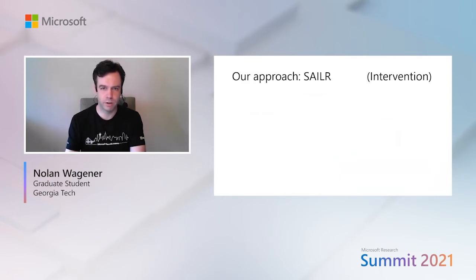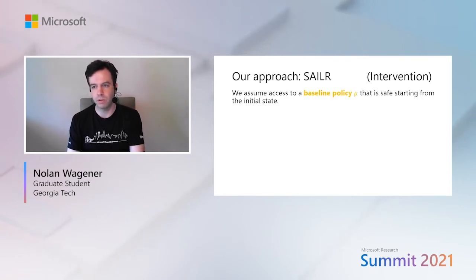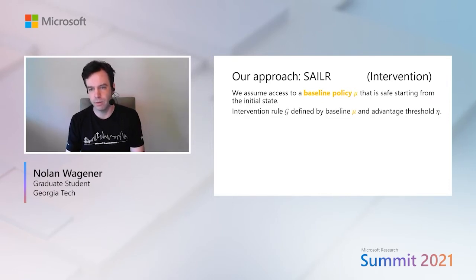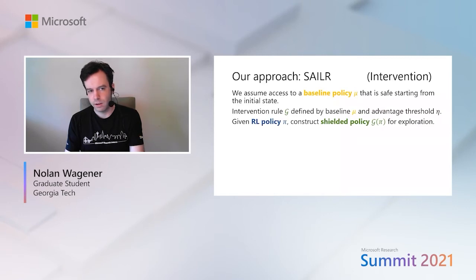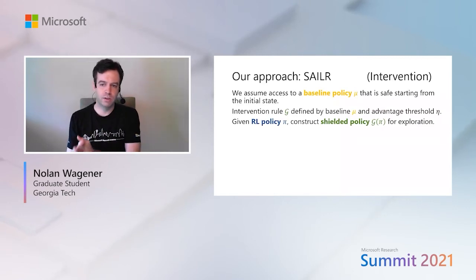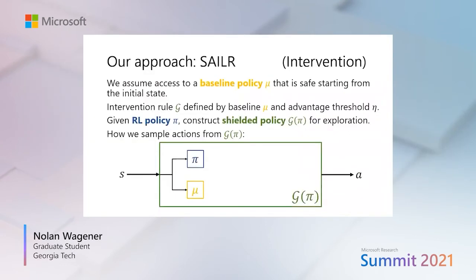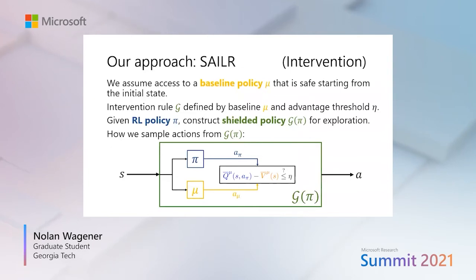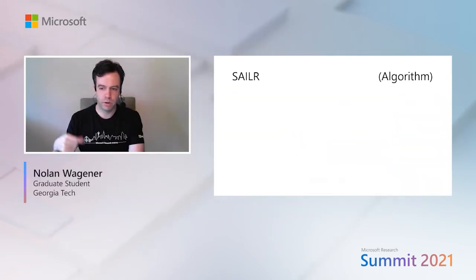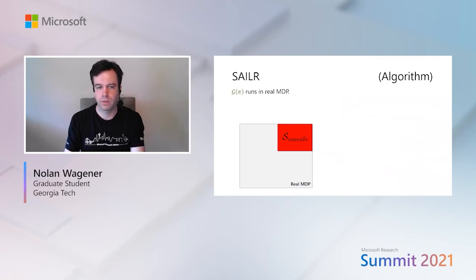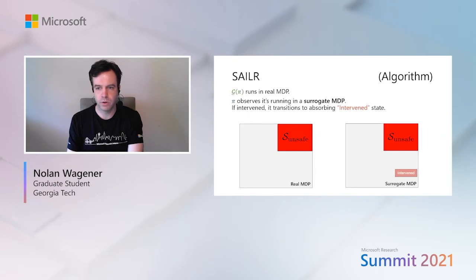Let's get into the algorithm. We assume access to a baseline policy mu that can keep the agent safe starting from the initial state. Given this baseline policy and an advantage threshold eta, we define an intervention rule g. Given an RL policy pi, we wrap it with g to form a shielded policy for exploration. To sample actions from this shielded policy, given state s, we query actions from both pi and mu, then compare the long-term cost of pi's action to that of mu's — hence the advantage function. If the relative cost meets the threshold, we return pi's action; otherwise we return mu's. The shielded policy runs in the real MDP, while the RL policy observes that it is running in a surrogate MDP constructed by the intervention rule.